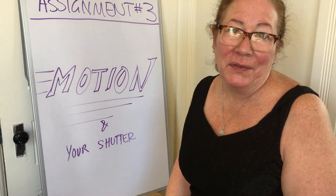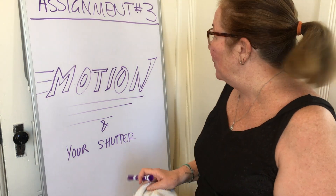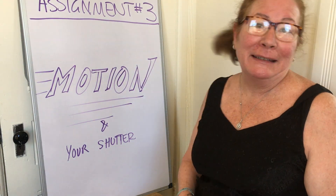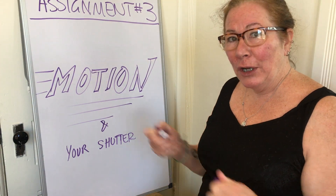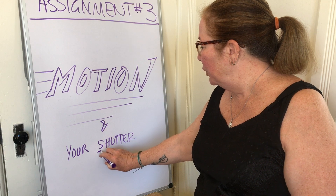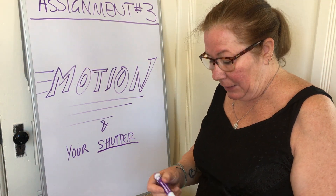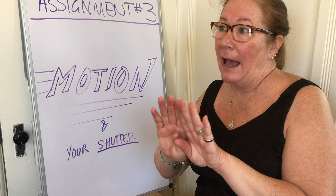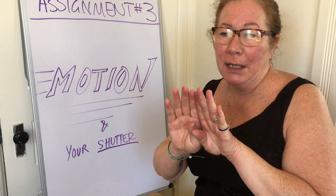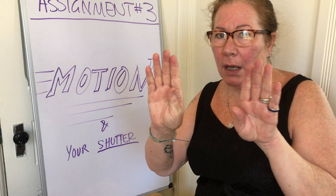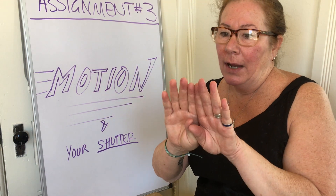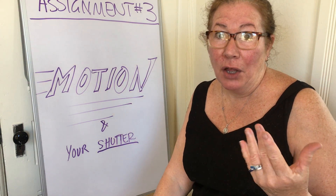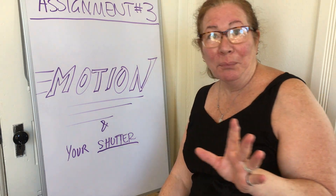Hello again, I'm Trish Trianzo Sullivan and today I'm going to talk about motion, which also has to do with assignment number three. The control on your camera that controls motion is your shutter. They call it shutter speed, but it refers to how long the shutter takes to open and close — it could be really slow like one second, or really fast like one three-thousandth of a second.